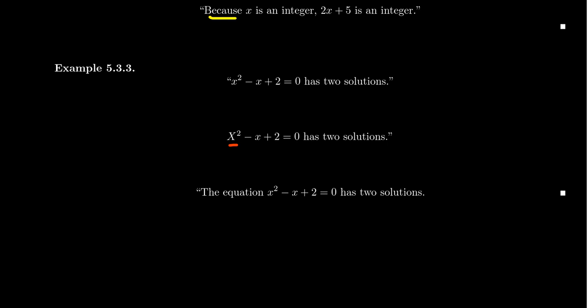Capital X squared minus lowercase X plus 2 equals 0 has two solutions. That's very, very, very different. So we can't capitalize to solve this. We don't want to start with mathematical symbols. Instead,